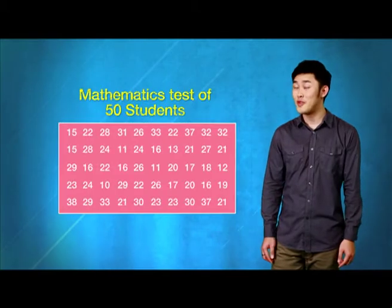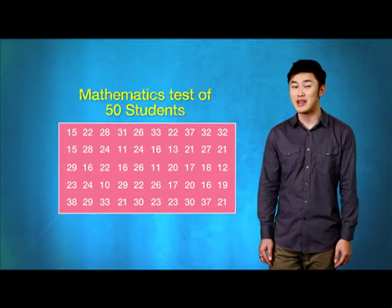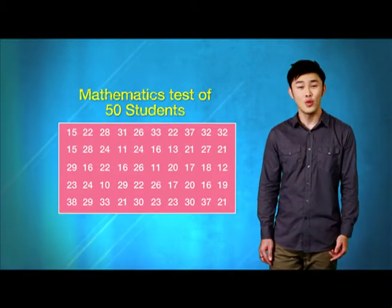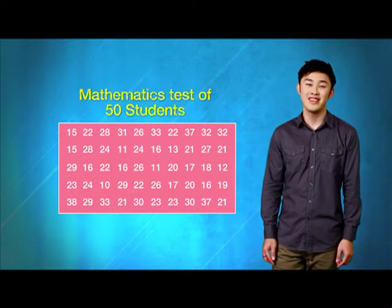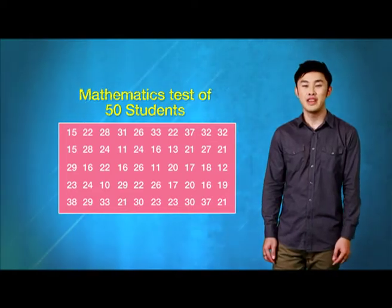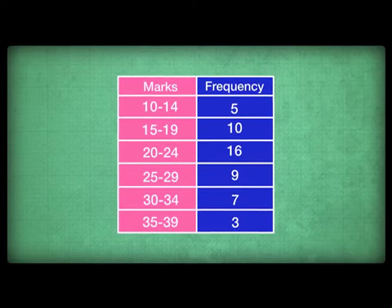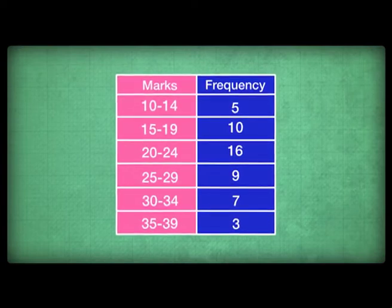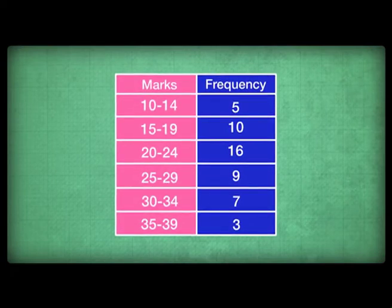Let's look at this data. These are the scores for 50 students in a maths test. To see the results in a way we can understand, let's put it into a table, like so. From this table, let's create a more comprehensive table so that we can draw a histogram and a frequency polygon.